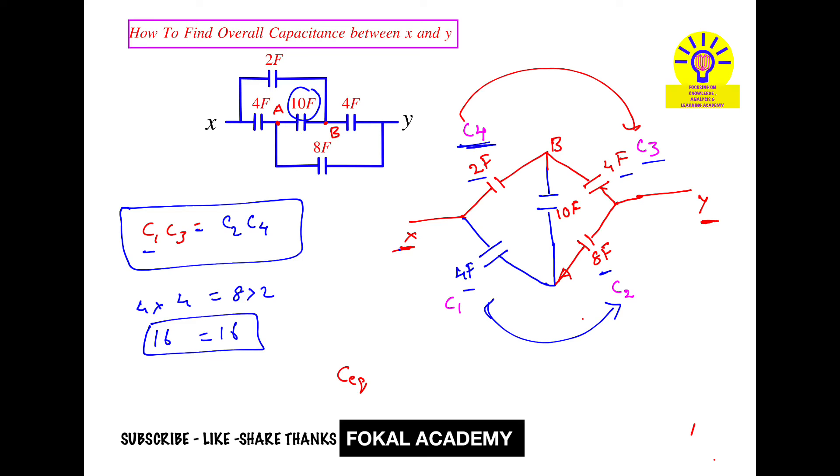So between these elements C4 and C3, their product, that is C4 into C3 upon their sum, that is C4 plus C3, plus similarly between these two elements, product C1 into C2 upon C1 plus C2. So this is the standard formula for finding the overall capacitance whenever the circuit is a balanced circuit.